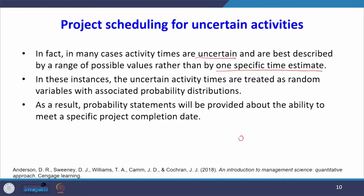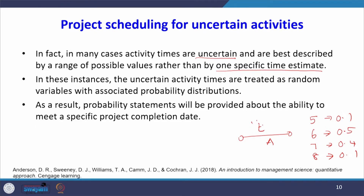For example, the activity completion time may follow any distribution. The probability of completing in 5 days may be 0.1, completing in 6 days 0.5, 7 days 0.4, and 8 days 0.1. This time estimate t is following an empirical distribution — it can follow normal distribution, uniform distribution, or beta distribution. In this class, we assume the activity completion time follows beta distribution.